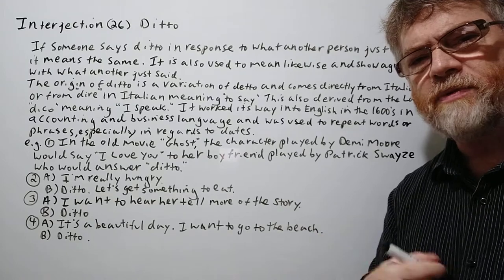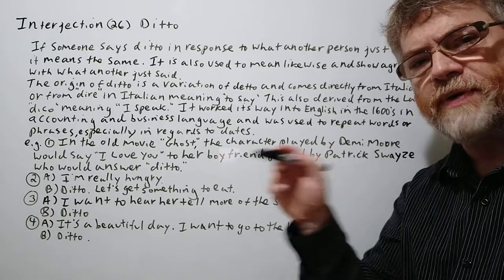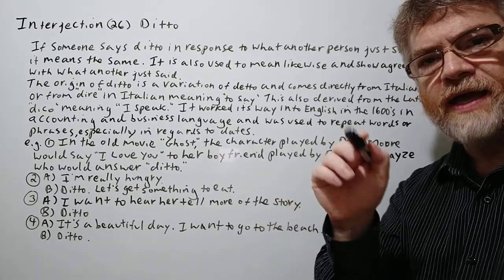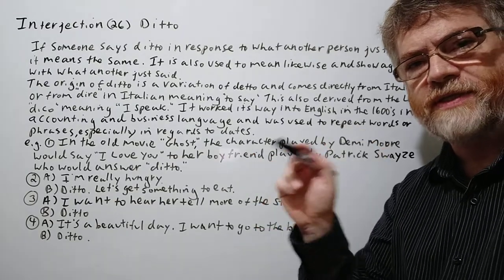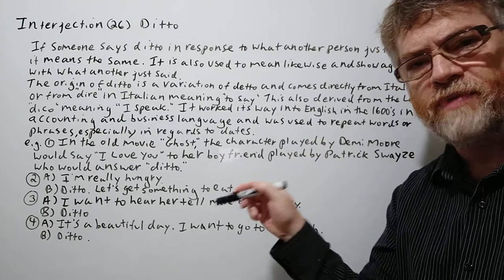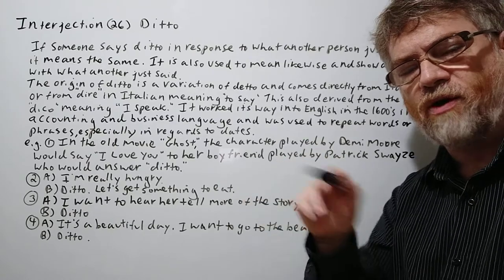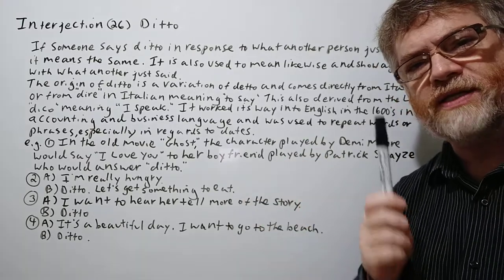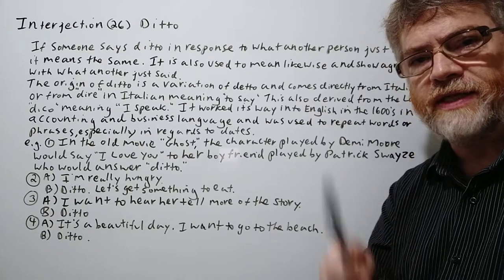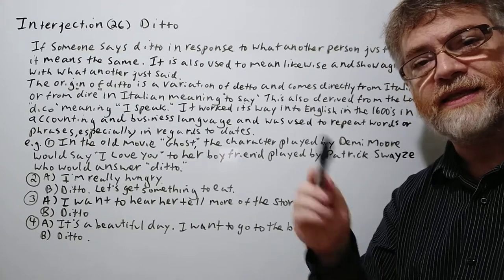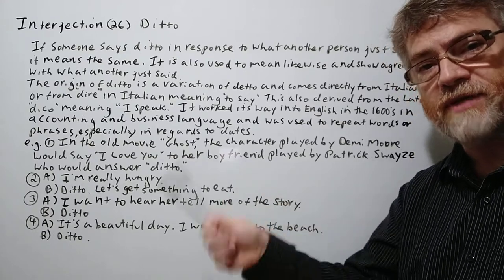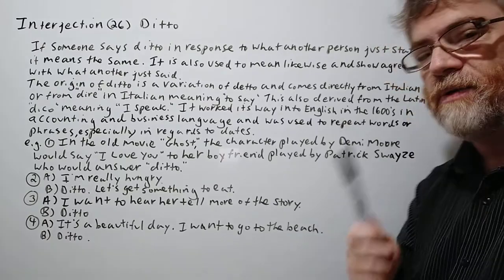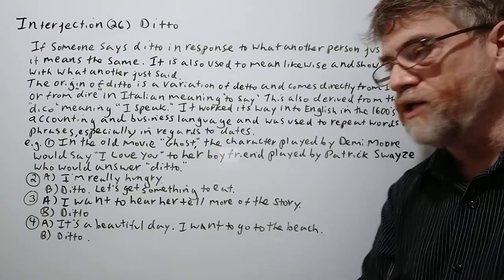Especially when they were keeping records and repeating dates, they just wrote 'ditto' as a repeat rather than writing all the dates over and over again. That's one of the ways it started to be used, and that's how it came to mean 'the same.' That's how it got into English.